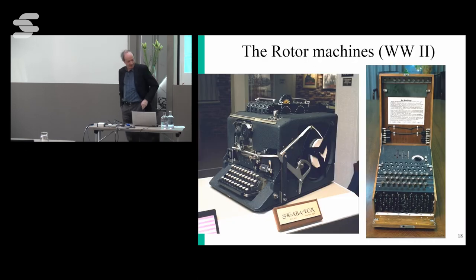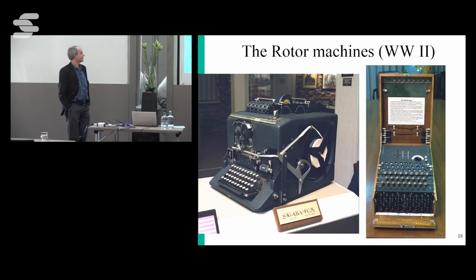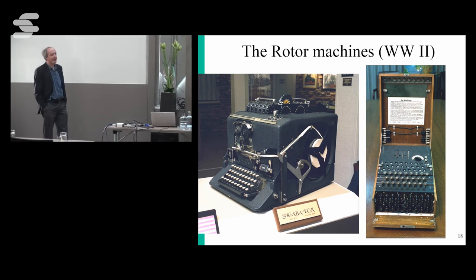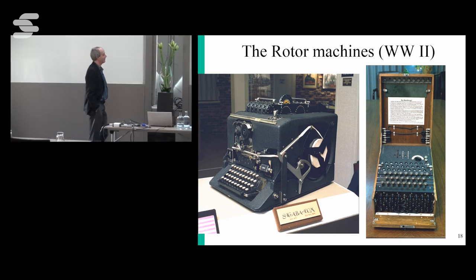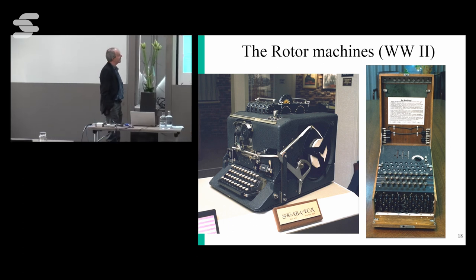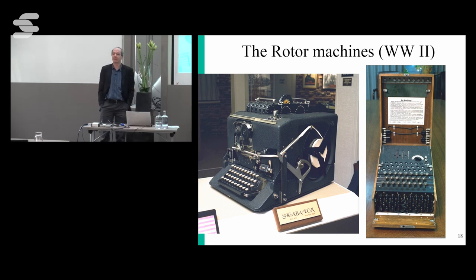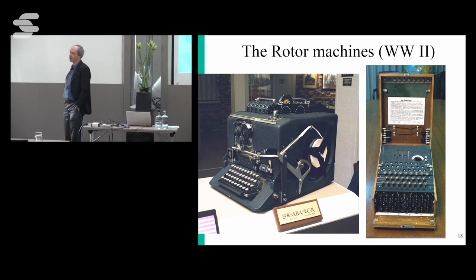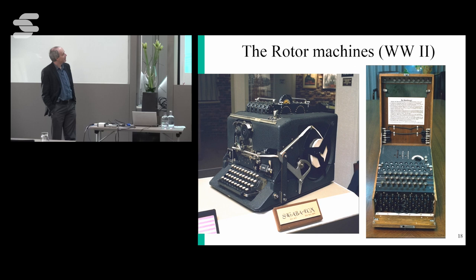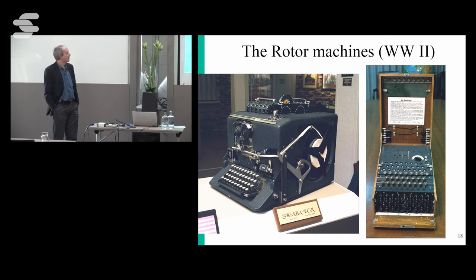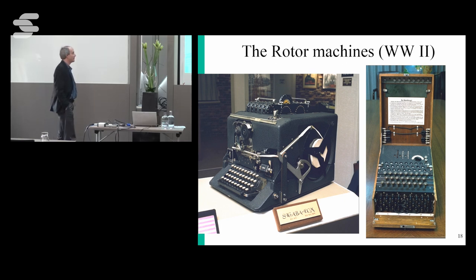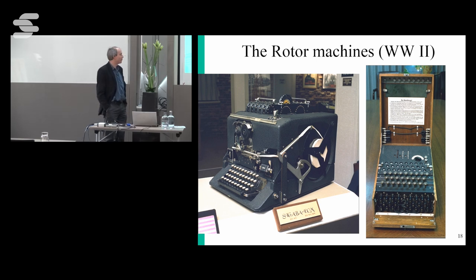Back to history — two famous machines: the Enigma, which you've probably all heard about, was broken by the Polish, who told the French, who then told the British, and Alan Turing perfected the attack. The German traffic, including traffic to the U-boats, was being read, which probably played an important role in winning World War II. The device on the left, Sigaba, I find much more interesting because it was used by the Americans for strategic communication, and it's interesting because you never heard about it — it was declassified only in 1995, 50 years after World War II.